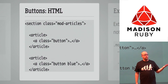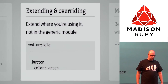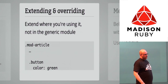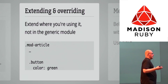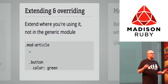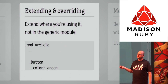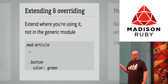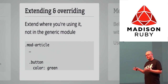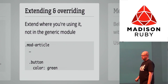You can use the button module inside the articles module. Sometimes you want to extend and override — this button looks the same everywhere except in a specific module. In that case I just override this generic module inside a more specific module.